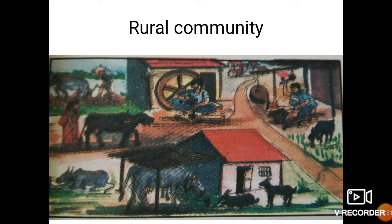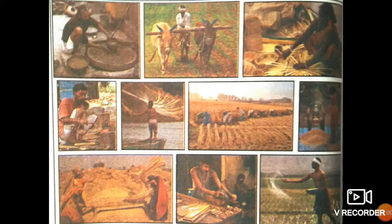Now we will learn about rural community. You can observe in the picture that the people living in villages are called rural community. Each family in a community needs many things and equipment for their day-to-day activities. Interdependence is found more in rural communities. People respect all occupations. In the picture you can observe some of the agricultural activities and non-agricultural activities.